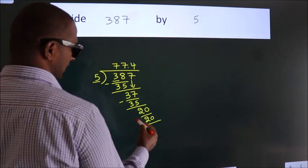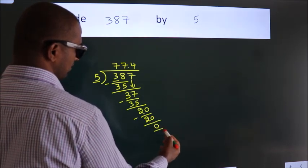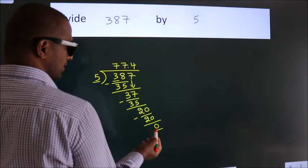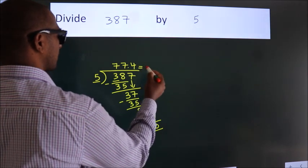Now we subtract. We get 0. We got remainder 0. So this is our quotient.